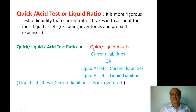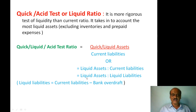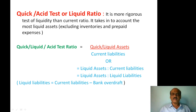The liquid ratio, quick ratio, or acid test ratio is equal to quick assets or liquid assets divided by current liabilities. It can also be expressed as liquid assets is to current liabilities. If you want the absolute liquid ratio, then it is liquid assets is to liquid liabilities. Otherwise, quick assets or liquid assets divided by current liabilities is used for calculating the quick ratio or liquid ratio.